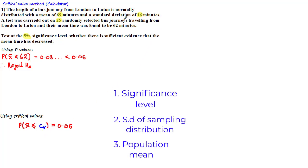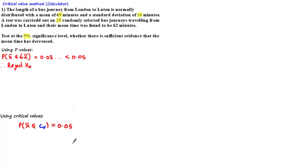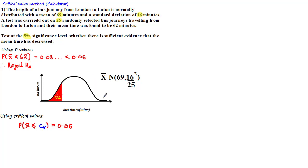In the question, I've highlighted the key values that will help us to figure out these parameters. I've also drawn the normal curve which represents the sampling distribution of sample means in this example. Using the highlighted figures, we have that the population mean is equal to 69 and the variance is equal to 16 squared divided by the sample size 25. Shading this region to be the significance level helps us to better visualize that we are looking at the lower tail.